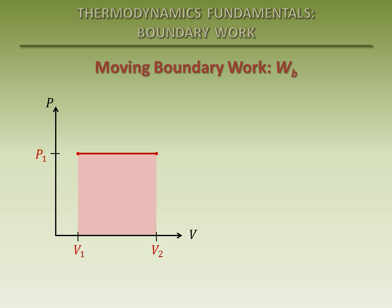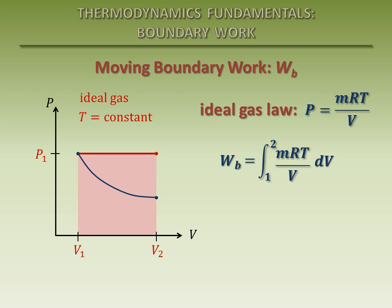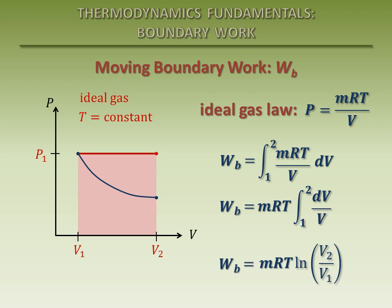Now let's look at a different case where the gas behaves as an ideal gas, and the temperature of the gas remains constant during the expansion process. The ideal gas law provides the functional relationship between pressure and volume. This relationship can be shown as a process path on the PV diagram. The mass of the system, the gas constant, and the temperature all remain constant during the expansion process, so they can come out of the integral. Evaluating the integral provides us with an equation for the total boundary work performed during the process. Again, the boundary work is equal to the area under the process path curve on the PV diagram.